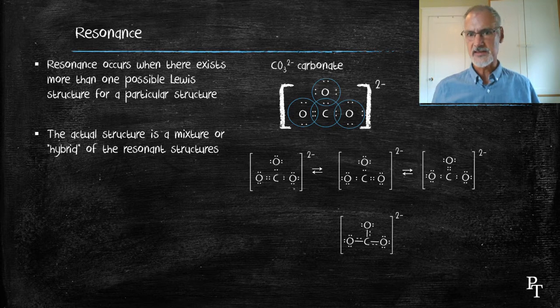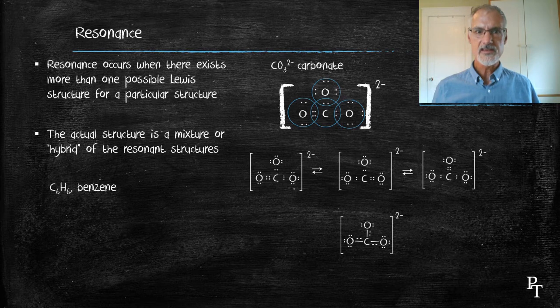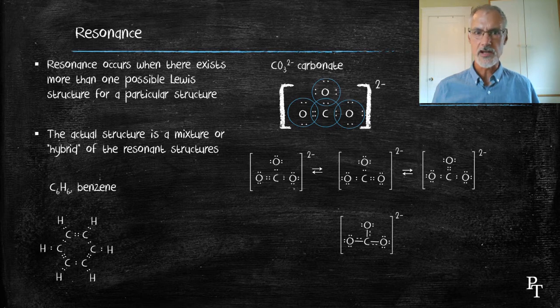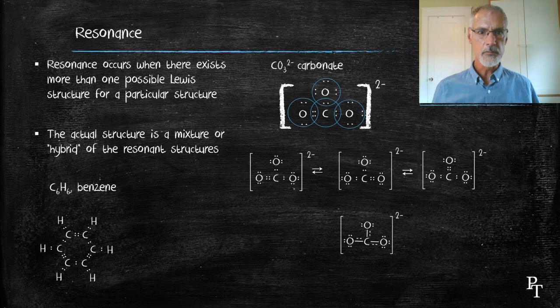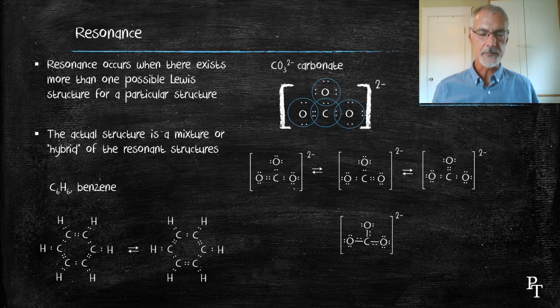Benzene is one of the classic examples of a resonance structure, C6H6. It consists of six carbons arranged in a ring surrounded by six hydrogens, and here is an appropriate Lewis dot structure for that molecule. However, those double bonds can move to different locations, as shown in this diagram. So benzene has the ability to exist in either form.